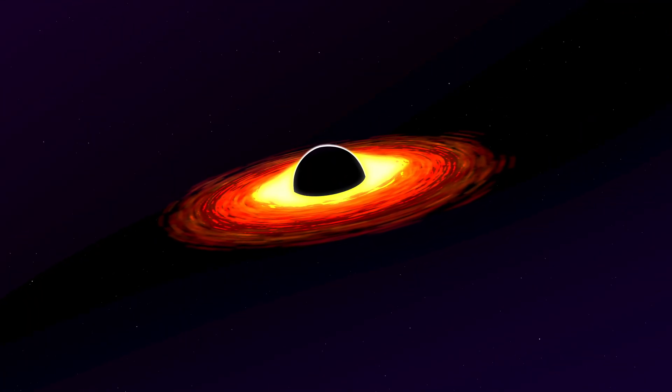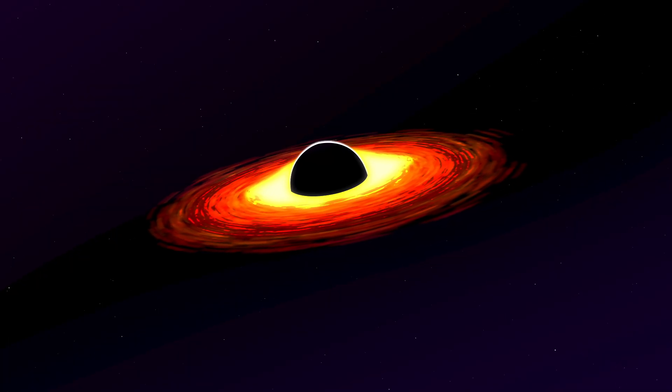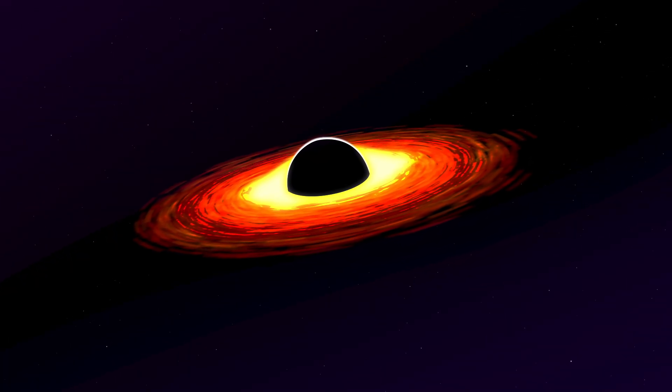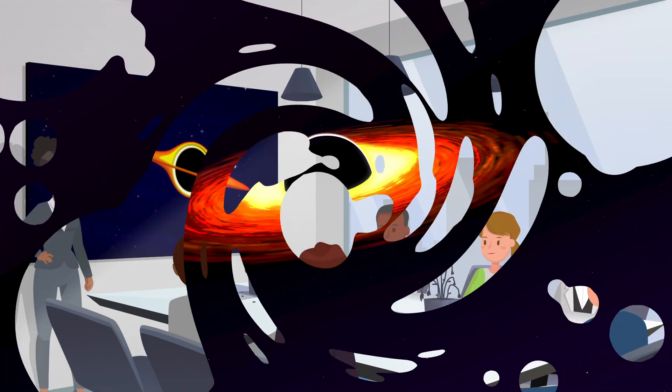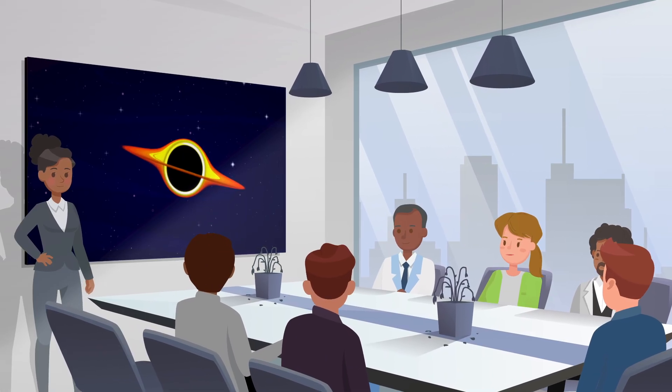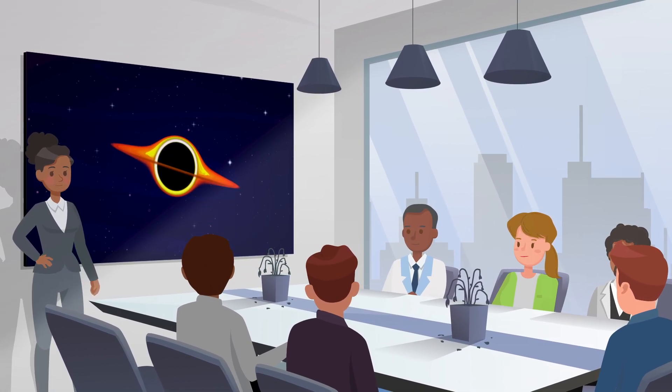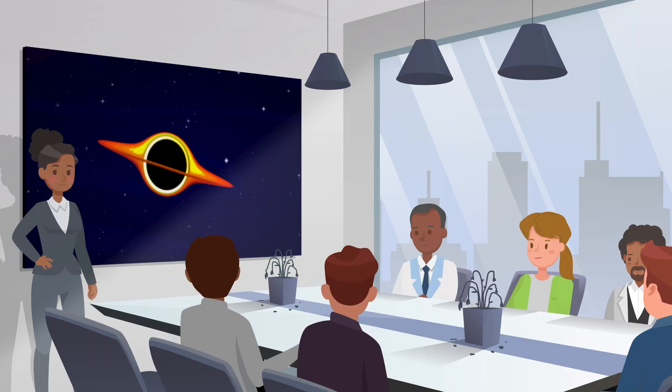But in principle, a black hole with one solar mass is structurally conceivable, perhaps just very unlikely to actually exist. There's ongoing debate about this topic, especially given the theorized existence of primordial black holes, which may get a lot smaller.